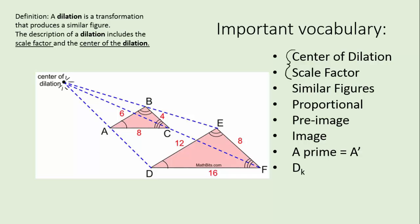If it's an enlargement, these lines will go past the original figure and create a bigger figure. If it's a reduction, these lines will intercept a smaller figure on the way to the larger figure. That's the center of dilation and sometimes it's right inside the figures or it can be outside like this one. It can be anywhere.